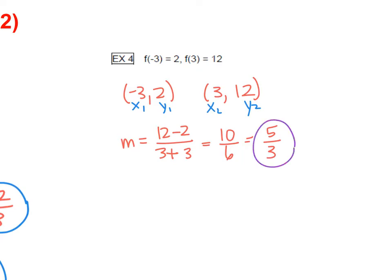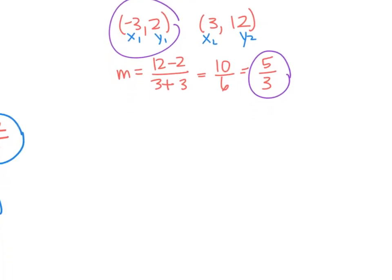So then you grab your slope, and you pair it with that first point, and we can go into point slope form. y minus 2, so y minus y1 equals 5/3 times x minus x1, which is -3, so we'll say plus 3.